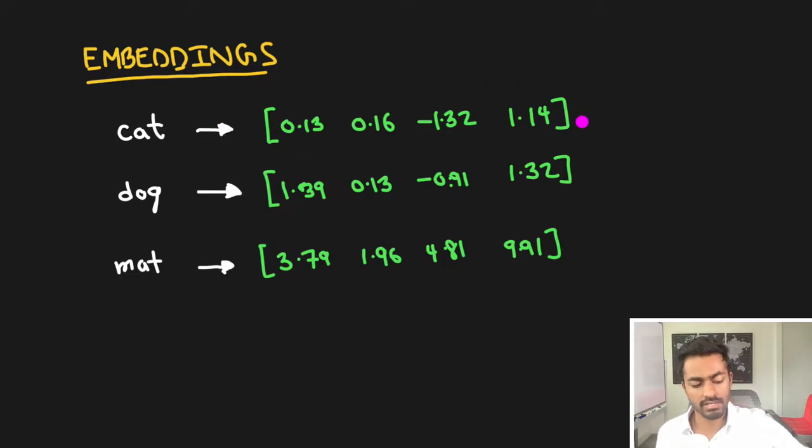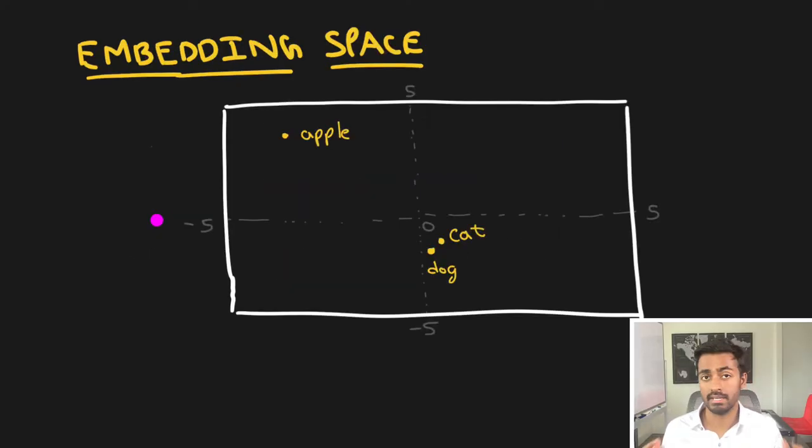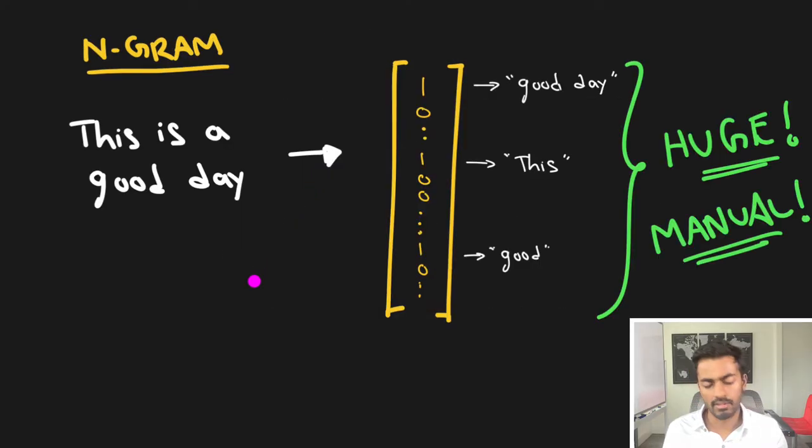These numeric representations are called embeddings, and ideally the closer the numbers are to each other, the closer is their meaning. You'll have two similar meaning words closer to each other than, say, apple which is way up here. Early representations of words and sentences involve breaking them down into their corresponding n-grams.